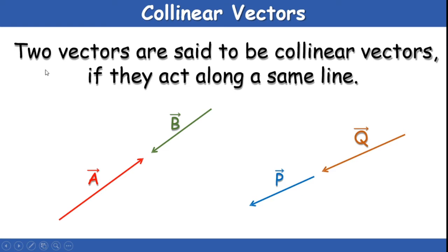Collinear vectors: if both vectors are acting along the same straight line, we call them collinear vectors. Vector A and vector B are said to be collinear because they are both acting along the same line. Importantly, collinear vectors need not be in the same direction — A and B may move towards each other, or both may move in the same direction along that line.